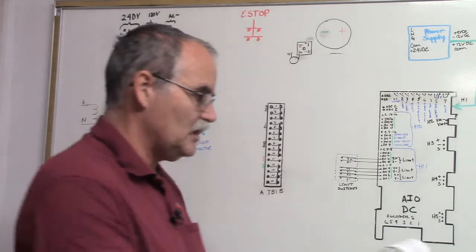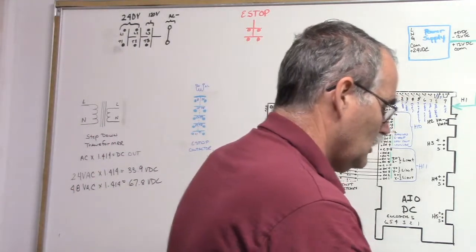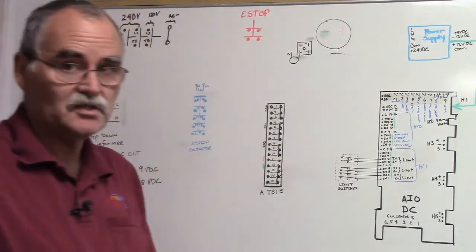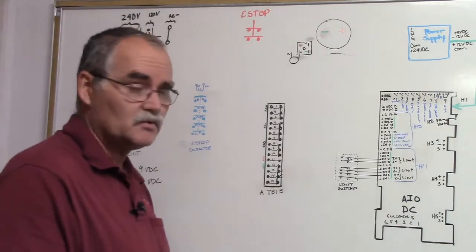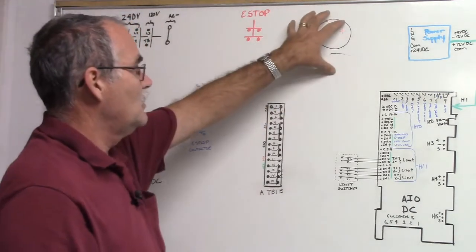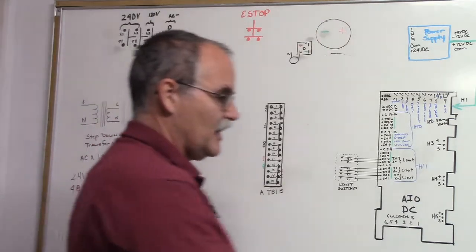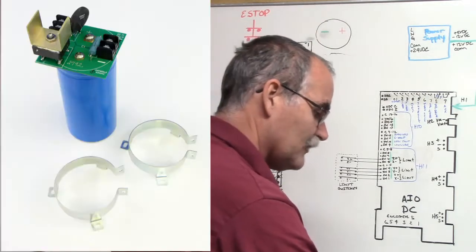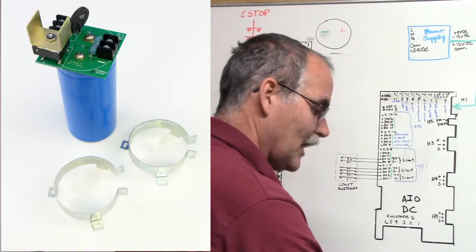We talked a little bit about the catboard. I'm following the all-in-one DC installation guide as a resource for this discussion. We talked about the catboard. Centroid has, if you're going to buy it from them, they have two versions. They have a catboard low and a catboard high.